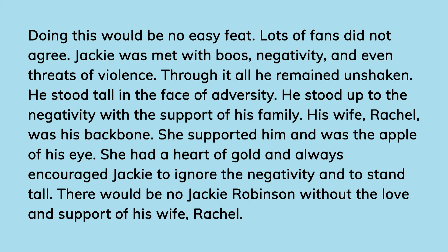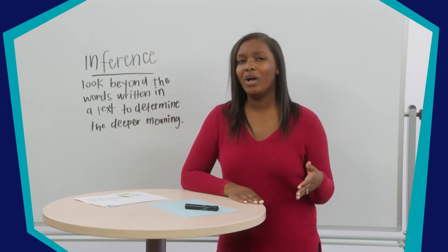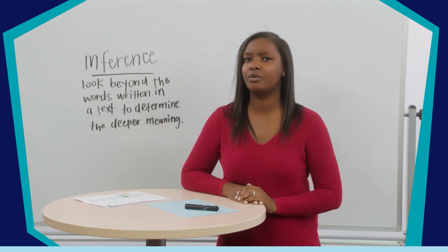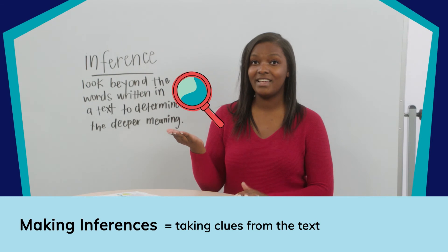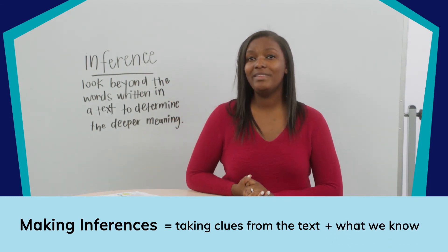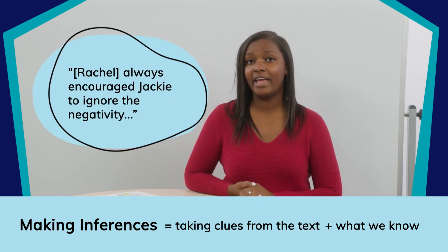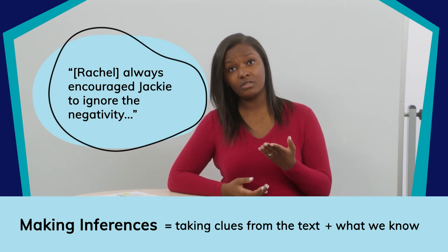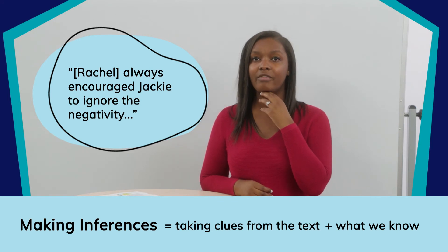Can you find a quote in the text that explains how his wife helped him to be successful? I want you to point to it, and once you've got it, say 'got it.' What quote did you find? Go ahead and whisper it to me. So when I read paragraph three, I see it says: always encouraged Jackie to ignore the negativity and to stand tall. Based on what is said about Jackie's wife, Rachel, what can we infer that Rachel pushed Jackie to do? When we infer, we take clues from the text and add that to what we already know. The clue in the text tells us Rachel encouraged Jackie to ignore negativity. When I add that to what I know about Jackie — that he had to face obstacles — this tells me that he looked to Rachel as a source of encouragement.